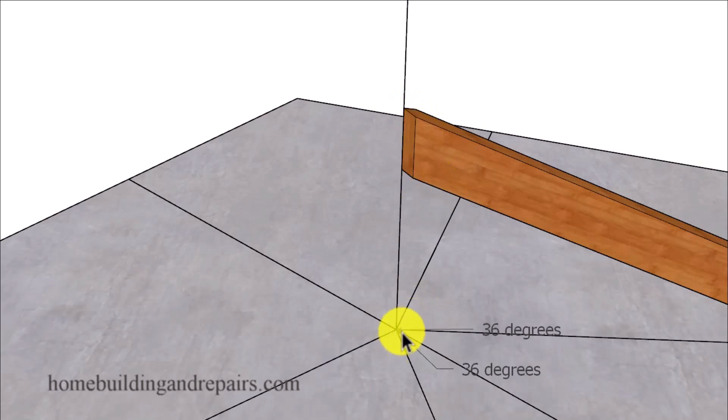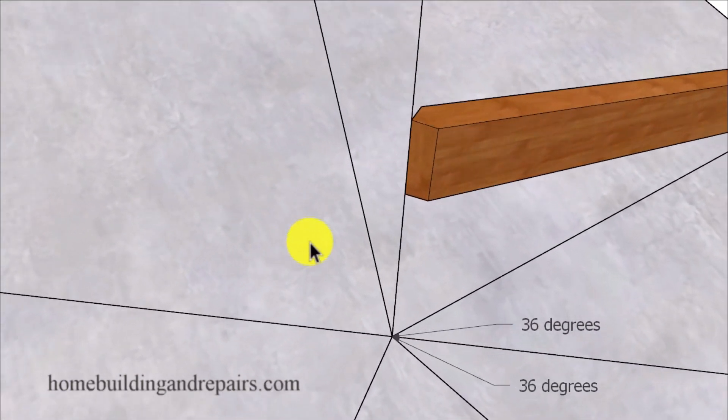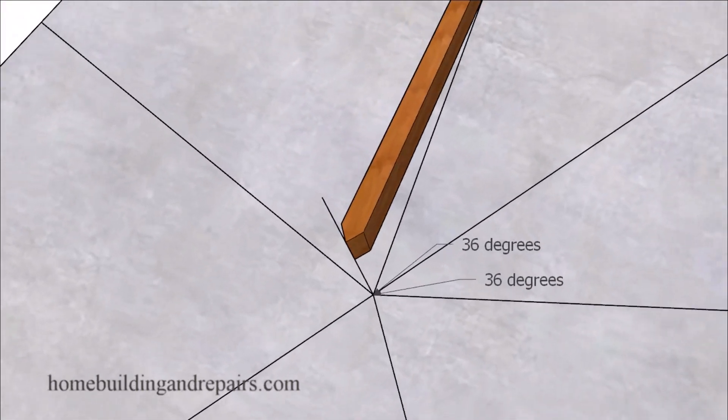Now when it comes to making our cuts here, our cuts will be at a 36 degree angle. We have a 72 degree angle here, or should I say we have five 72 degree angles. Half of that is 36 degrees. And that's going to be the angle that you're going to be cutting so that all of the rafters connect at the top center.